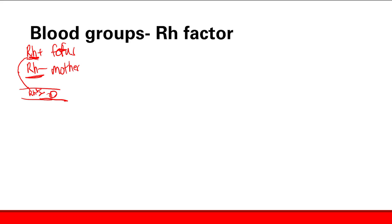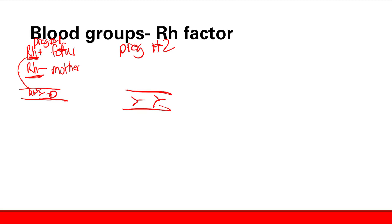This is not going to be a problem during the current pregnancy because it takes time to make antibodies — by the time there are antibodies, the mother will have delivered the baby. But this is going to be relevant in a future pregnancy. If the mother has a second pregnancy and now she has developed antibodies against RH factor in her bloodstream, if she gets another RH positive baby, these antibodies are going to be able to cross the placenta and attack the baby.